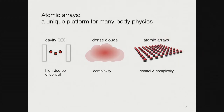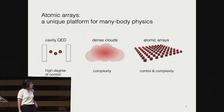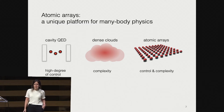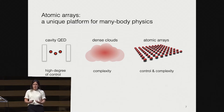Atomic arrays are a unique platform for many-body physics. Comparing with conventional platforms: in cavity QED, we have an atom or a few atoms interacting with a single optical mode of the cavity — high degree of control, but perhaps not so much complexity. On the other extreme are dense clouds of atoms in free space, where we have many atoms and many optical modes, making it complicated to describe — potentially a lot of complexity but very little control.